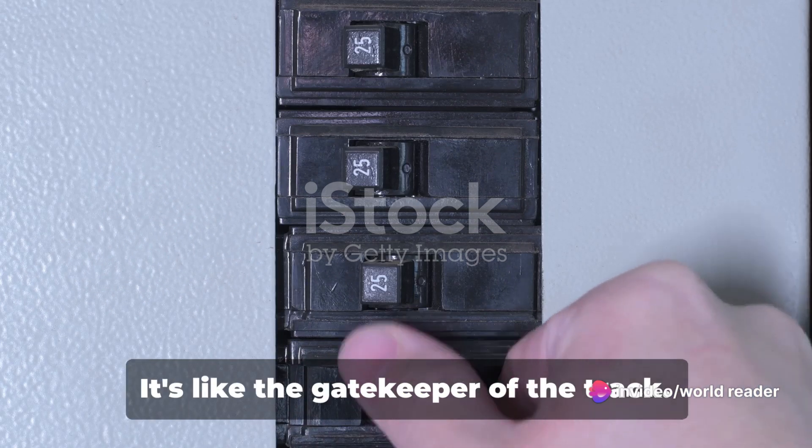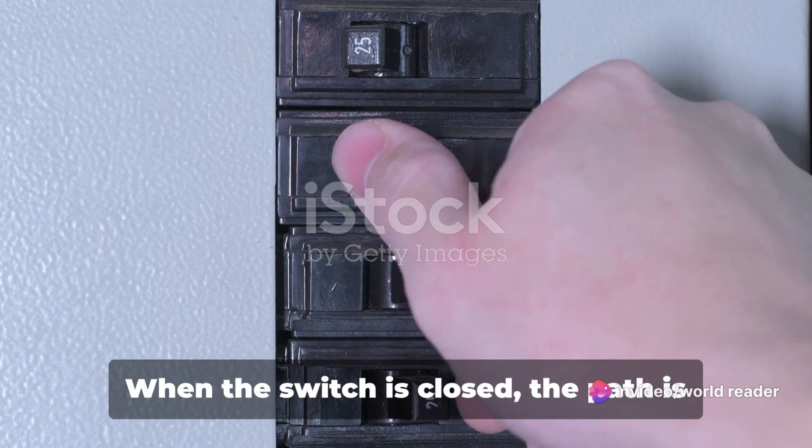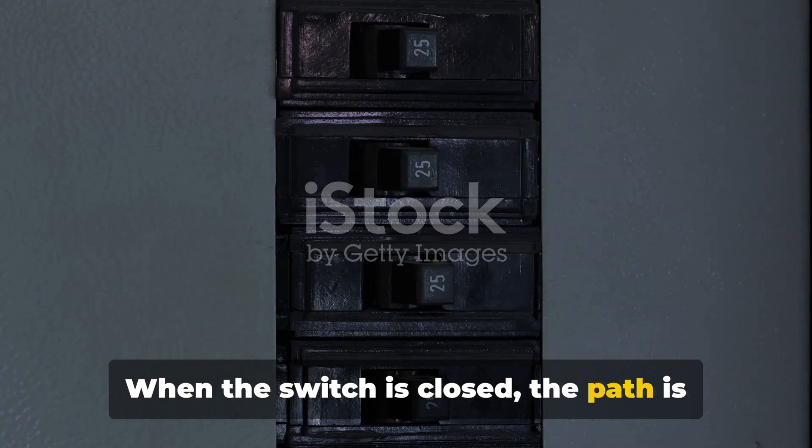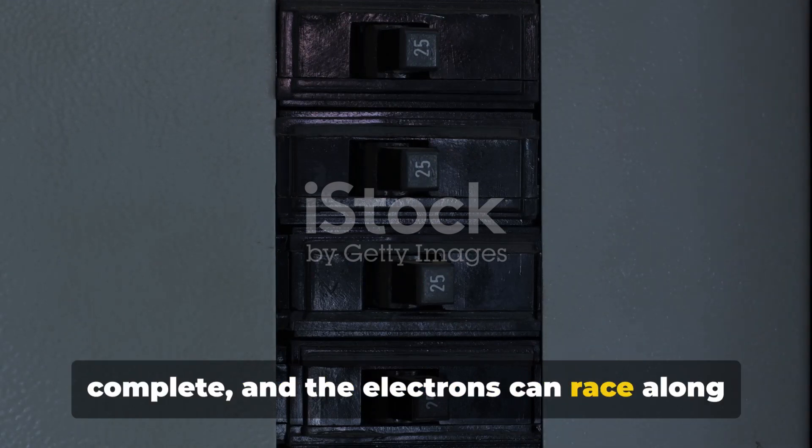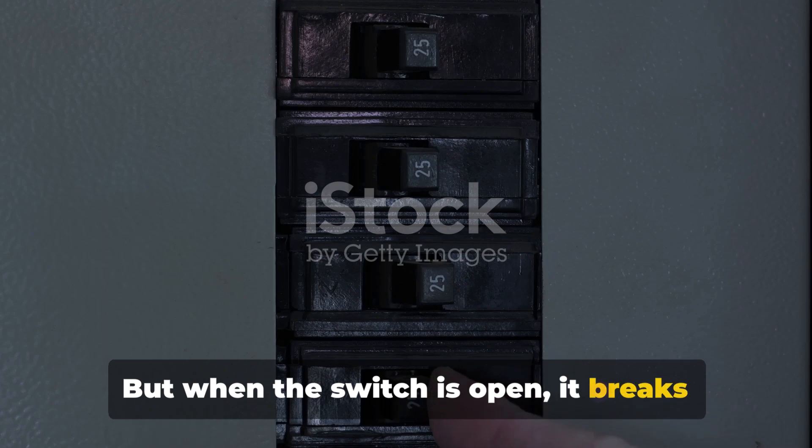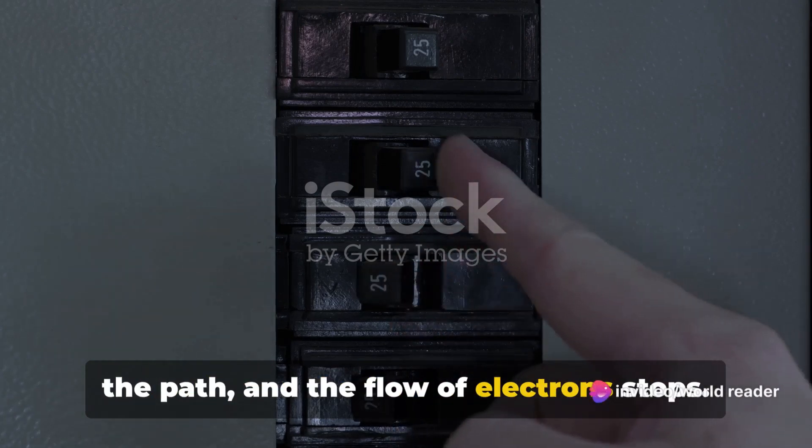Finally, we have the switch. It's like the gatekeeper of the track. When the switch is closed, the path is complete and the electrons can race along the circuit. But when the switch is open, it breaks the path and the flow of electrons stops.